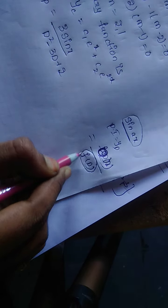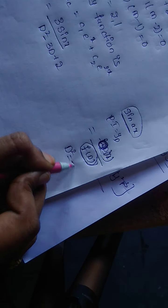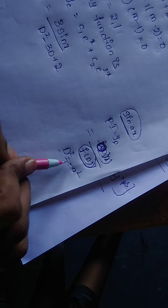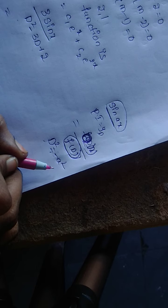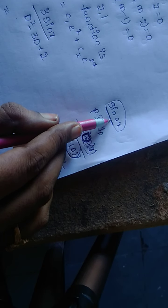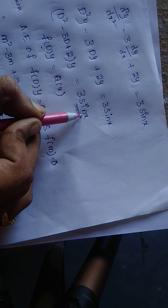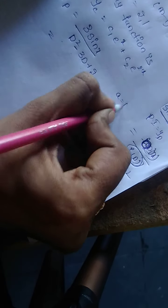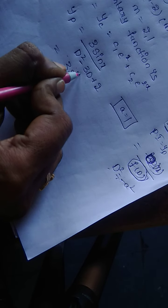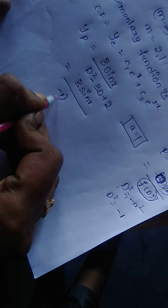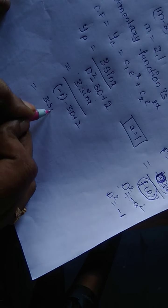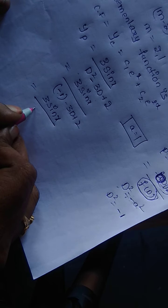Substituting D² = -1 into the denominator: 3 sin x / (-1 - 3D + 2) = 3 sin x / (1 - 3D). We then rationalize by multiplying numerator and denominator by (1 + 3D), giving 3 sin x · (1 + 3D) / (1 - 9D²).